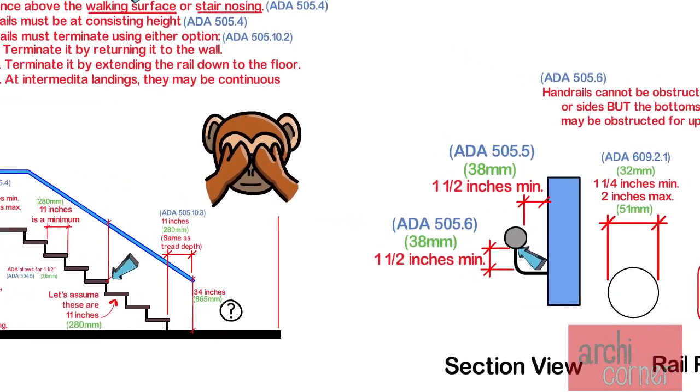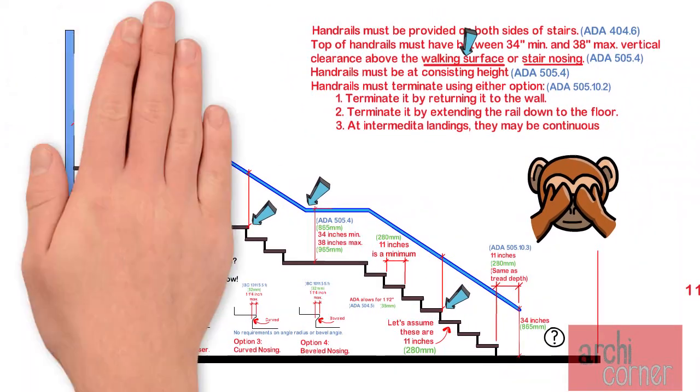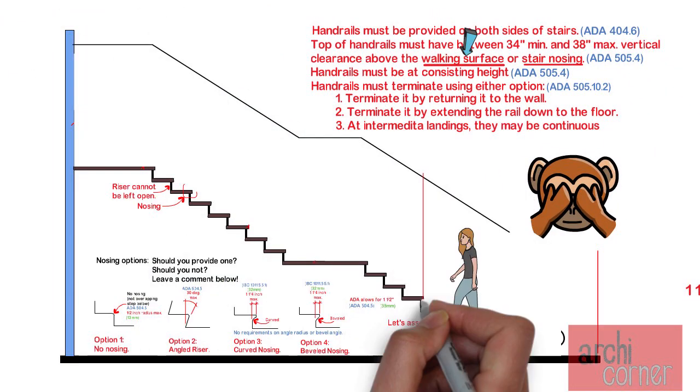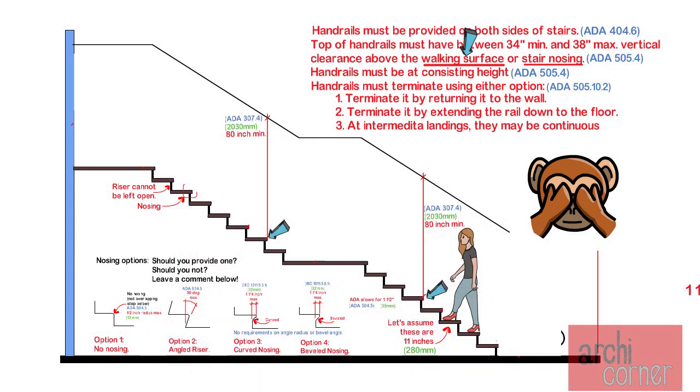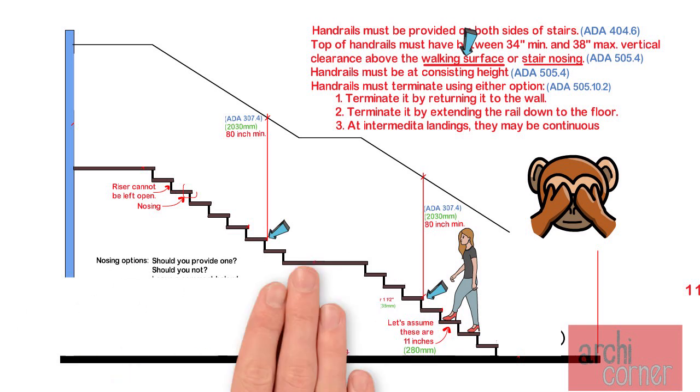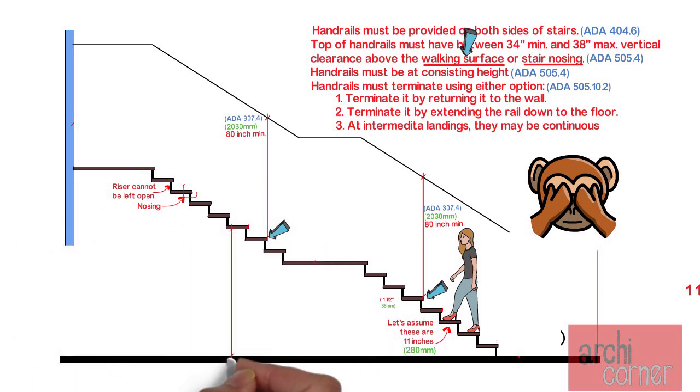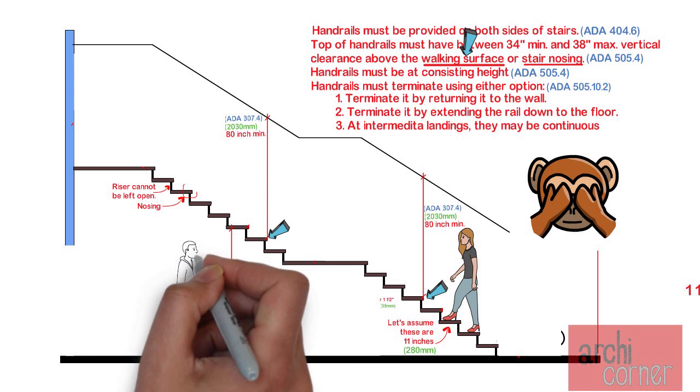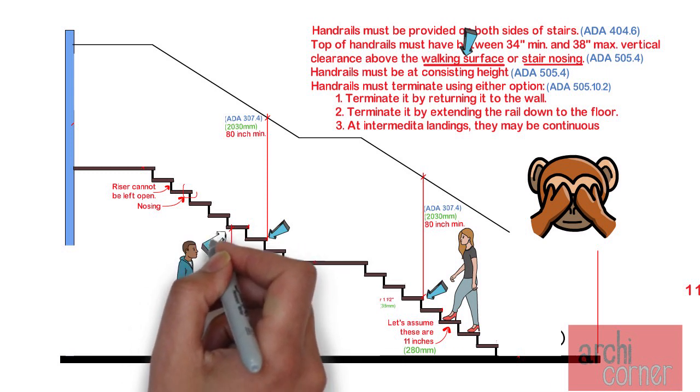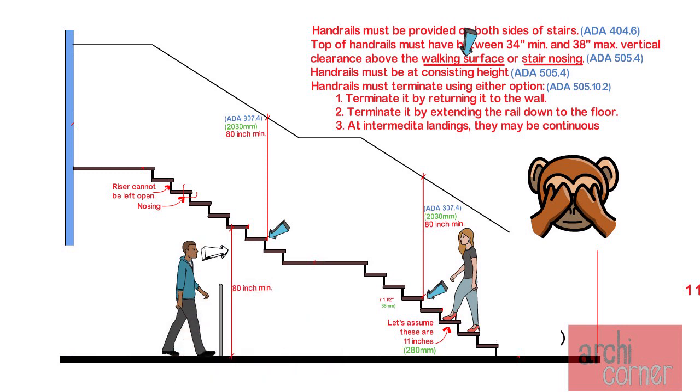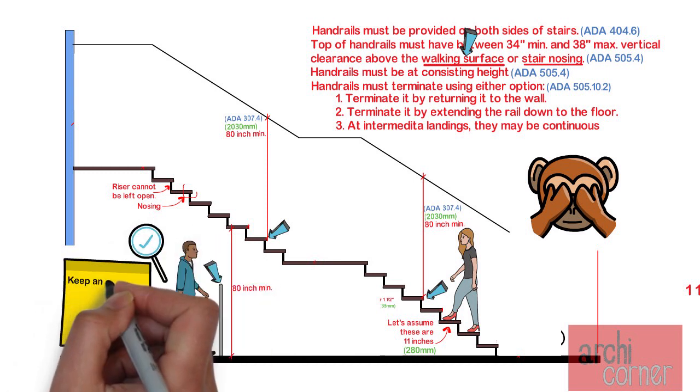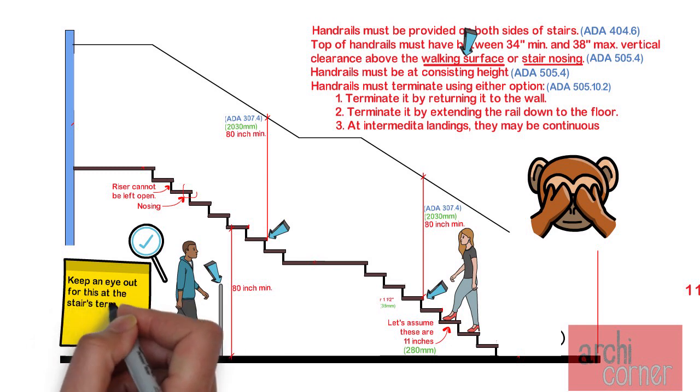Moving on to the vertical clearance requirements along stairs, this clearance must be a minimum of 80 inches and is normally measured from the edge of each nosing. This is usually addressed, but one location to look at carefully is the lowest floor where the stairs terminate. This area is so often overlooked. Be sure to provide a barrier, whether it is a chain, a rail, or something so that a person does not hurt their head underneath a stair. This is very typical at the ground floor where the stairs end. So keep an eye out for that.